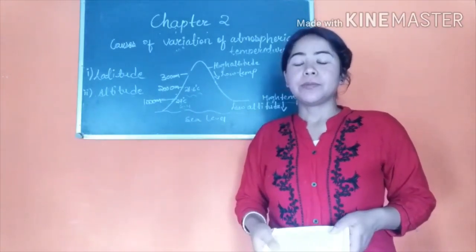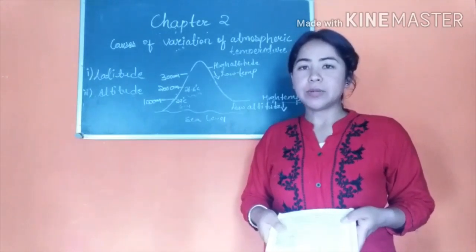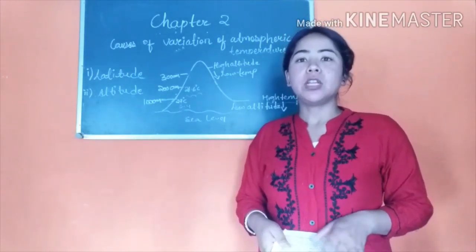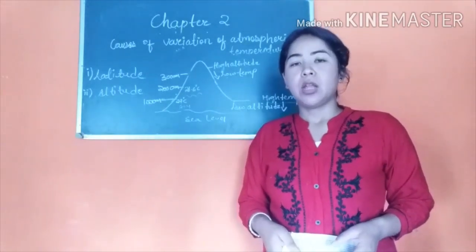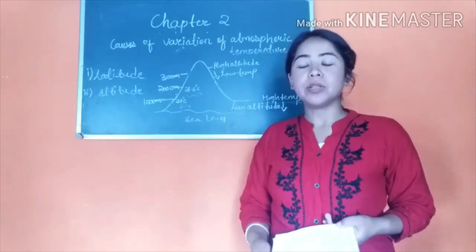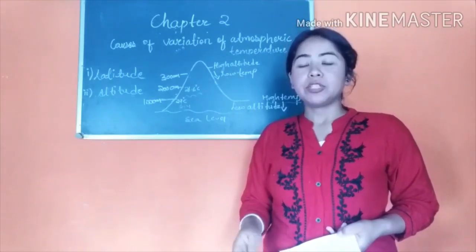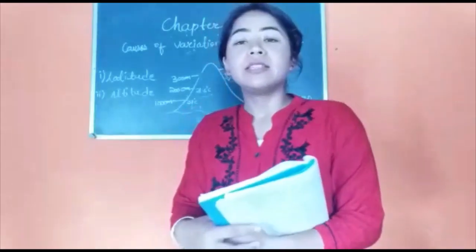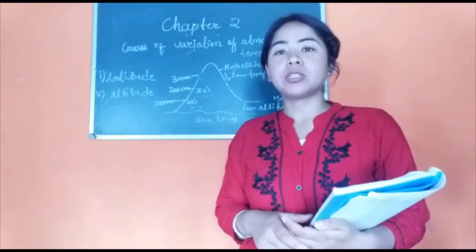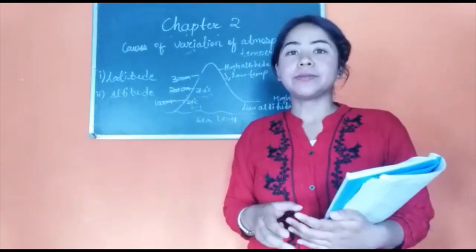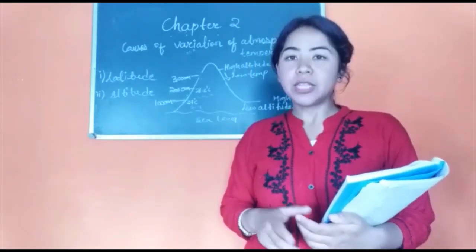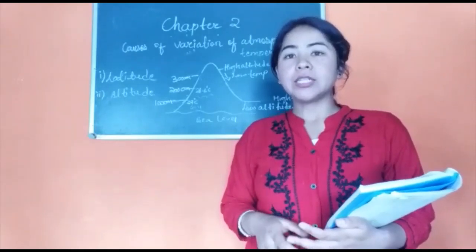There are three causes for the decrease in temperature with increasing height. The first cause is that the lower atmosphere is heavier because it comprises dust particles and water vapour, which absorb more heat — that is why areas at low altitude have high temperature. The second cause is that air at upper levels is rarefied and thin due to the absence of water vapour and dust particles, so the upper layer does not absorb as much heat.